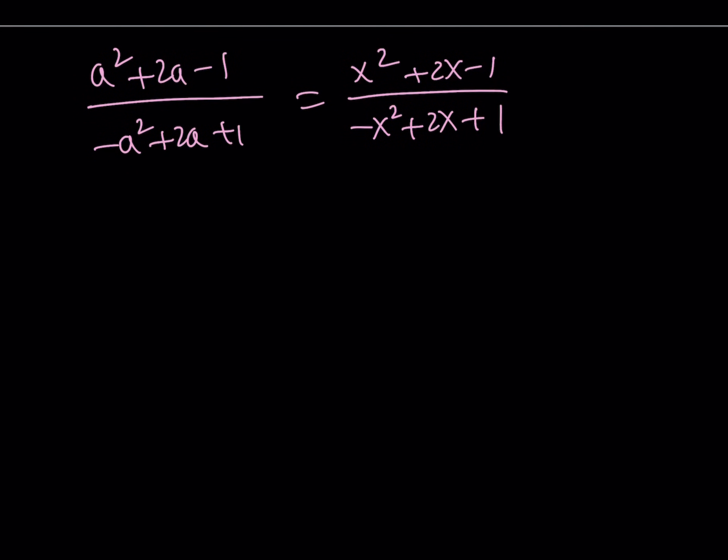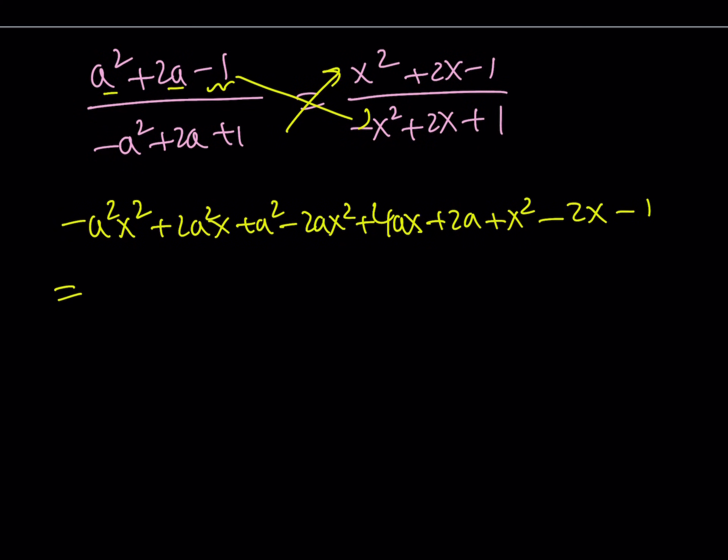I'm going to use cross multiplication. Let's go ahead and multiply these and then those. Let's distribute to a. That's going to give us negative a squared x squared plus 2a squared x plus a squared. And then I'll distribute to 2a over the bottom one on the right hand side. Minus 2ax squared plus 4ax plus 2a. And then finally, I'm going to distribute to negative 1. That's going to give me positive x squared minus 2x minus 1. And I'll do the same thing here.